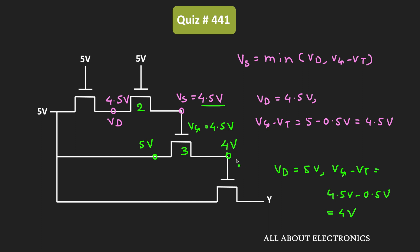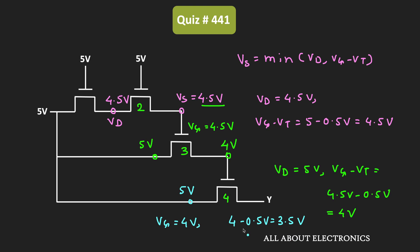That 4V input will act as the control input for the fourth pass transistor, meaning Vg = 4V for transistor 4. The voltage at the drain terminal is 5V. So the output at node Y will be the minimum of Vd and (Vg − Vt). In this case, Vg − Vt = 4 − 0.5 = 3.5V. Since this voltage is less than 5V, output Y will be equal to 3.5V.